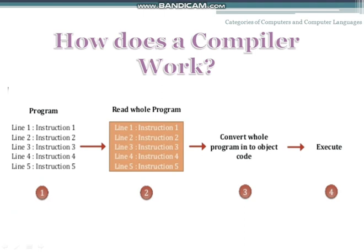The definition of interpreter and compiler is the same — both convert high-level language into machine level language — but there is a difference. A compiler translates the whole program at once; it does not translate line by line. An interpreter translates line by line. Once translated into object code, you get the list of errors from the whole program, and then you can correct them.